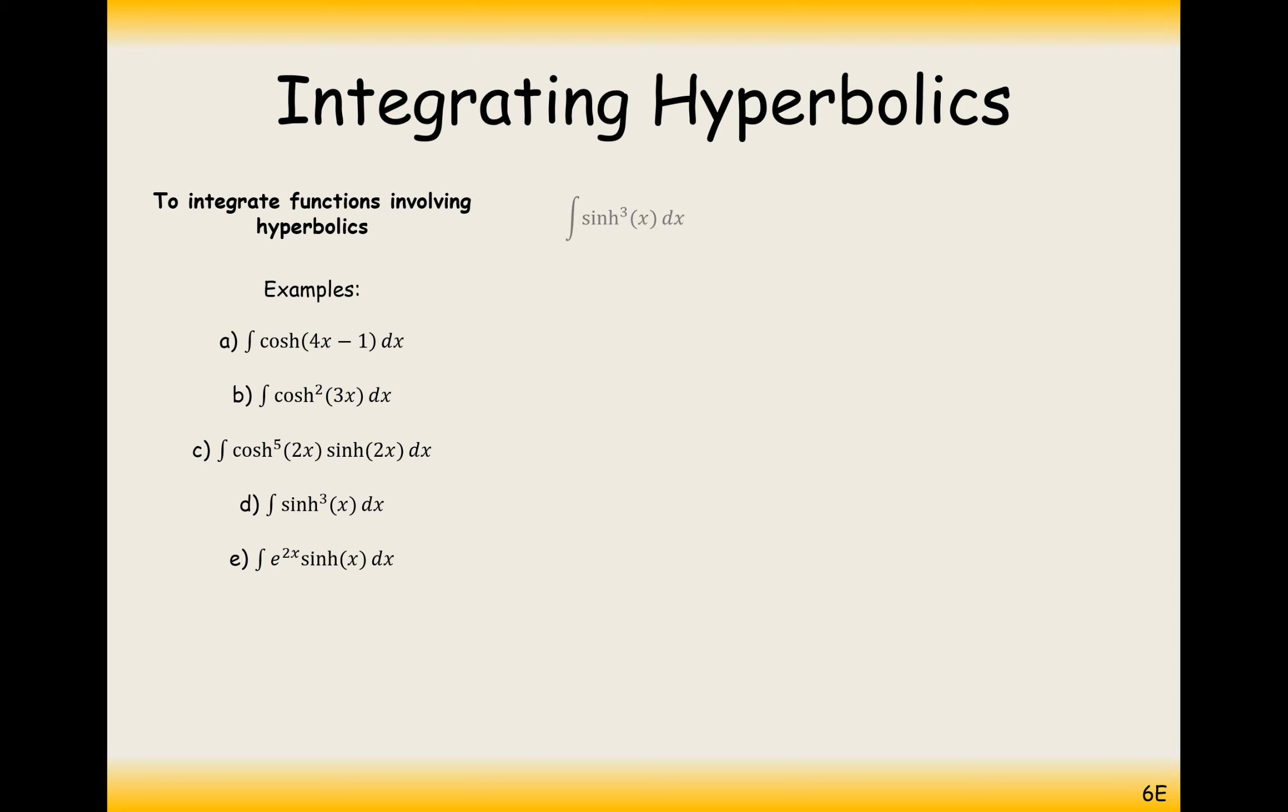We're going to do something very similar with this one, although it doesn't look like it yet. There's a little trick with sinh to the power of 3x: rewrite it as sinh squared times sinh. We'll recall the identity that cosh squared minus sinh squared equals 1. Rearrange that to cosh squared x minus 1 equals sinh squared. Replace sinh squared with cosh squared x minus 1, then expand the brackets.